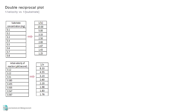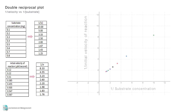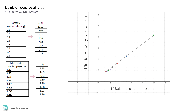Now, convert all the data points into 1 over the values. Then plot the graph again. You have now produced a double reciprocal plot. Make the best fit line from the plots, then extrapolate the line so it touches both the y and the x-axis.